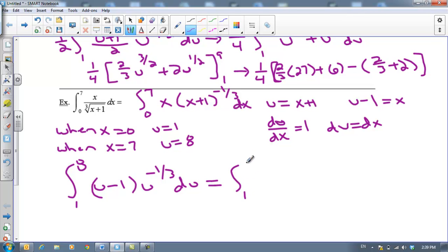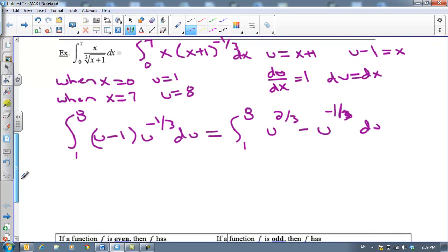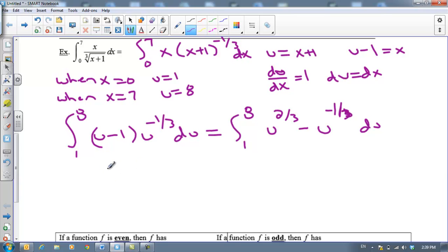So I've got the integral from 1 to 8 of u to the 2/3 power minus u to the -1/3 power du. Let me make sure that's a 3 there. There we go. Alrighty, so now we can integrate by doing our little fundamental theorem of calculus. I add 1 to 2/3, adding 1 would make that equal 5/3, and dividing by 5/3 is the same thing as multiplying times 3/5. So 3/5 u to the 5/3 power minus 3/2 u to the 2/3 power, and we're going to evaluate this between 1 and 8.